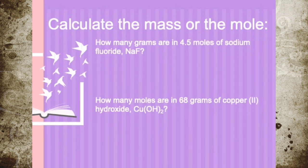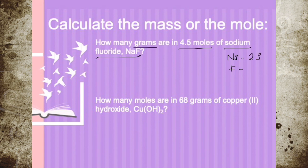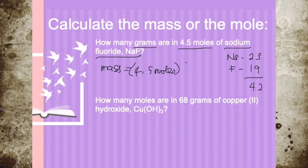Let's take a few more examples. How many grams are in 4.5 moles of sodium fluoride, NaF? First, find the molar mass of Na and F. Sodium is 23, fluorine is 19, so 23 plus 19 gives 42 grams per mole. Therefore, mass equals 4.5 moles times 42 grams per mole. Moles cancel, so 4.5 times 42 gives us 189 grams.